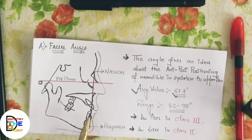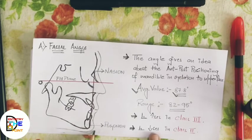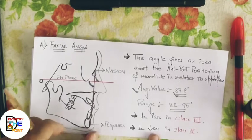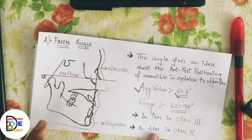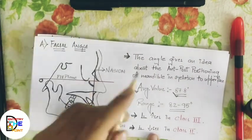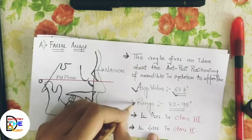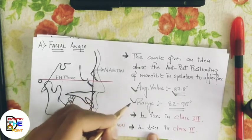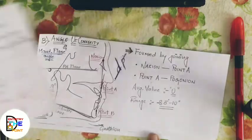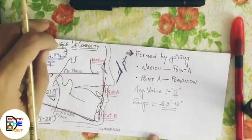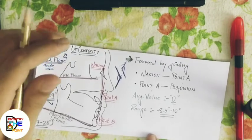If the facial angle is increased, it means the mandible is in a forward position — that indicates skeletal Class 3. If the angle is decreased, the mandible is positioned behind, indicating skeletal Class 2. The average values are noted but don't need to be memorized; the concept needs to be understood.